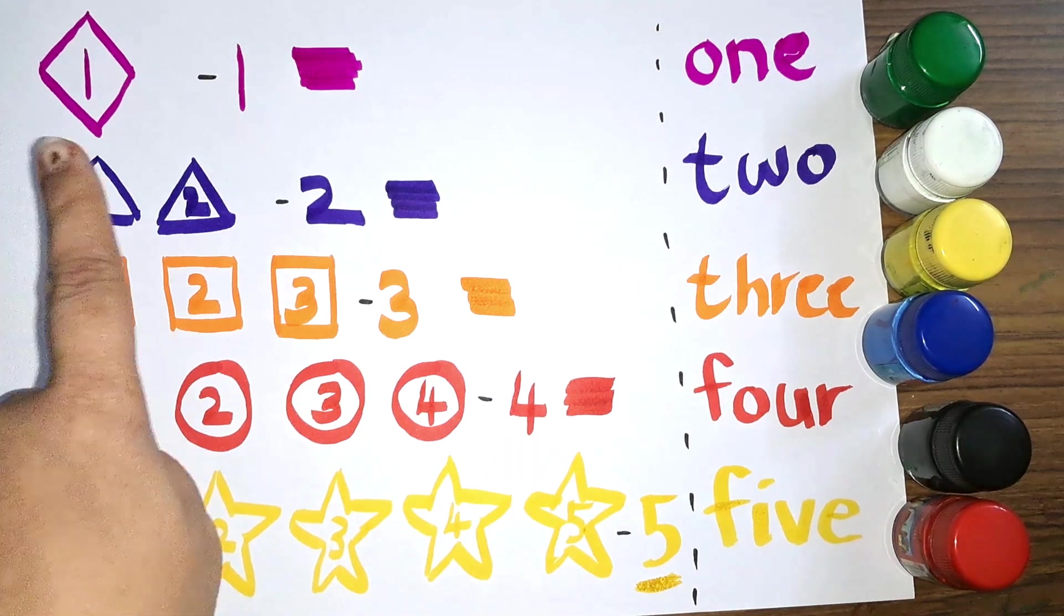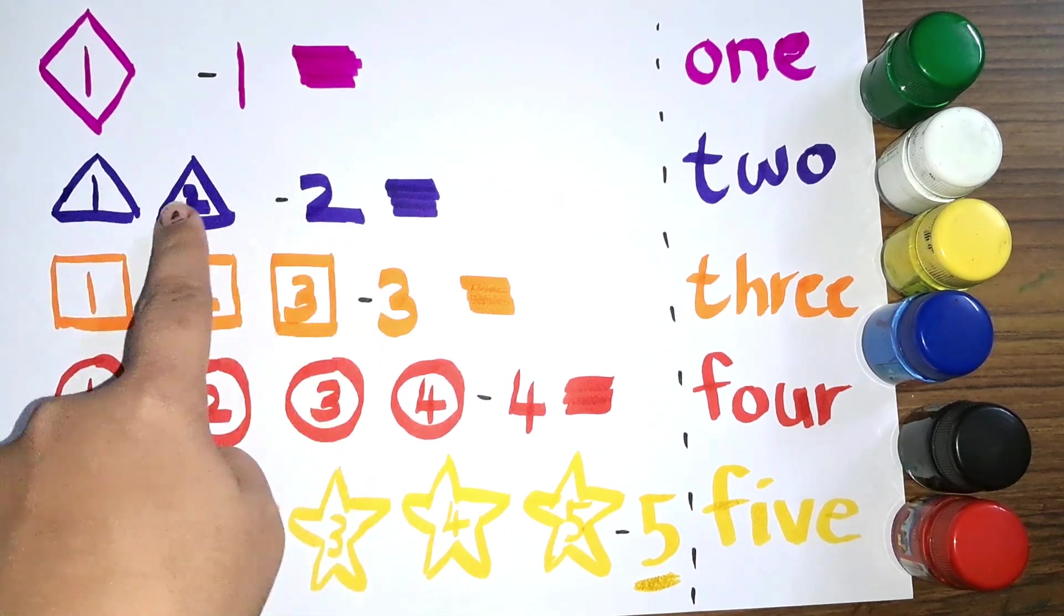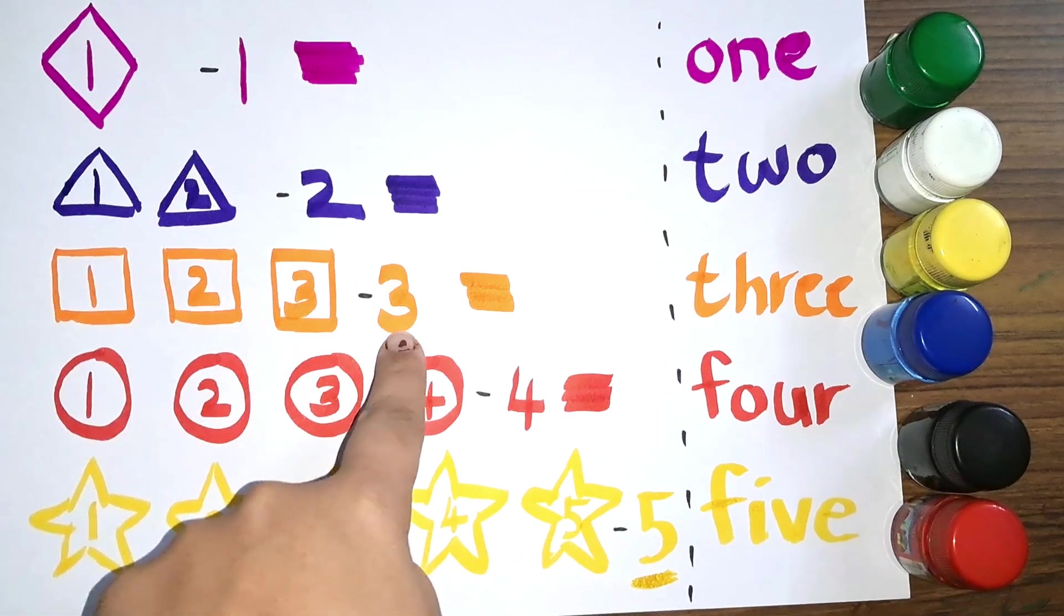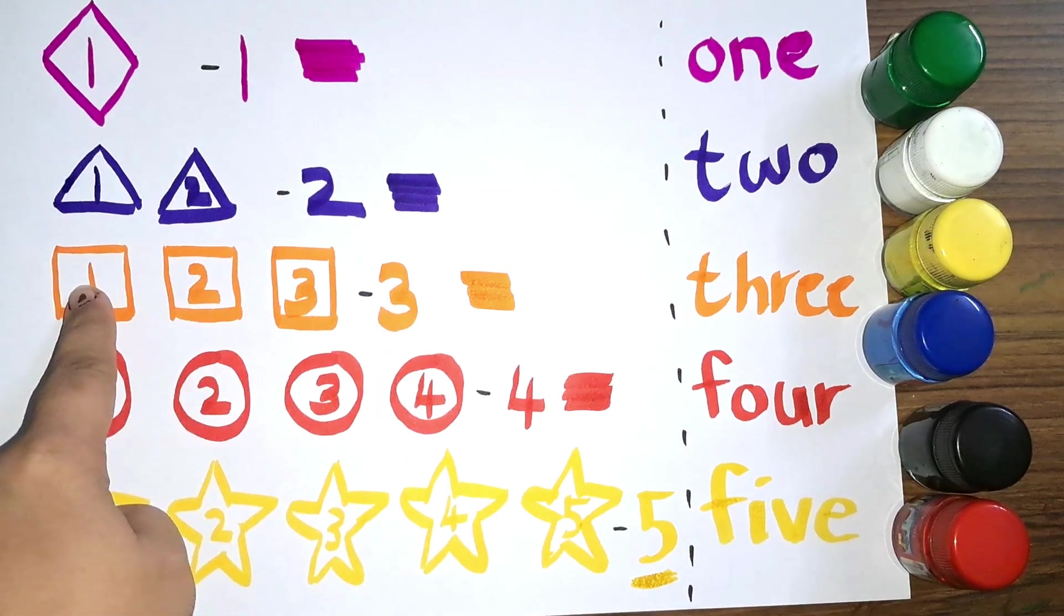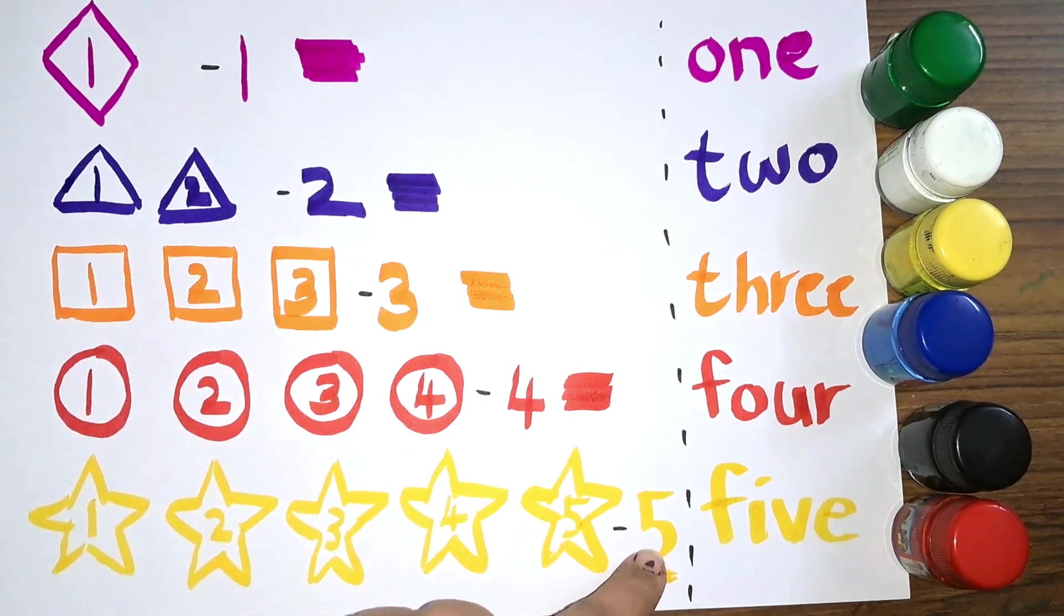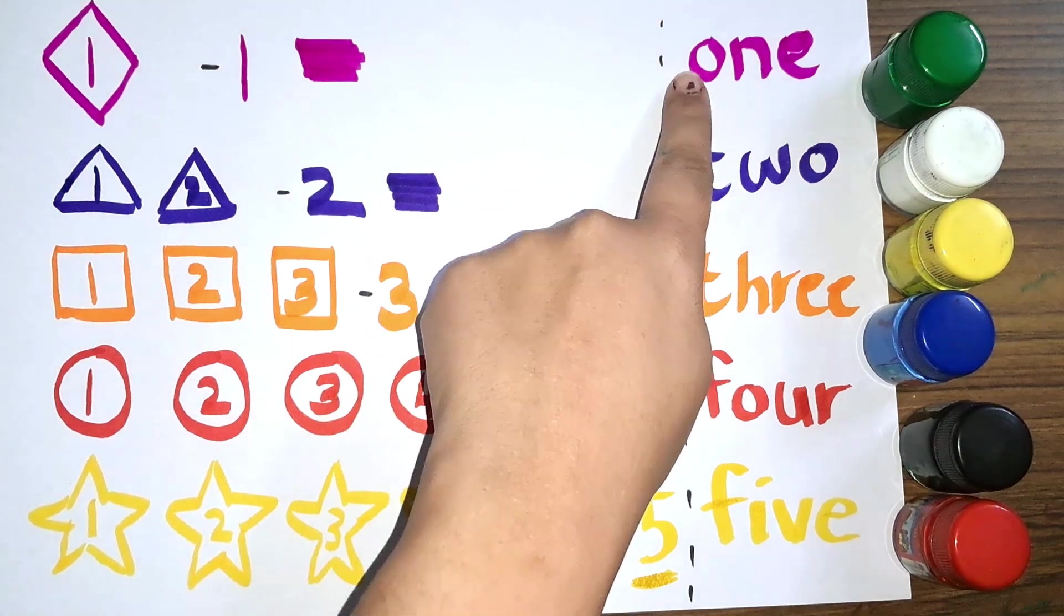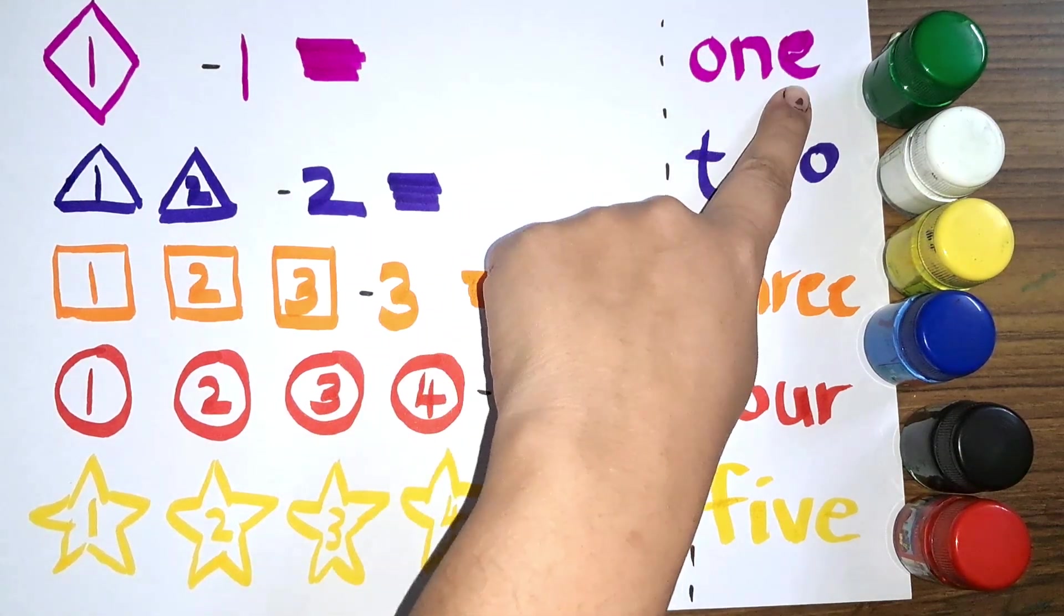Let's see the numbers: one, one diamond. Two, two triangles. Three, three squares. Four, four circles. Five, five stars. And the number names are: one, O-N-E, one.